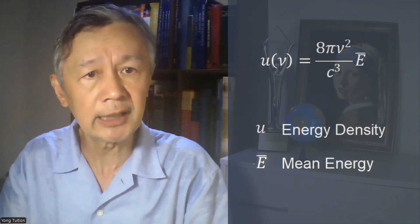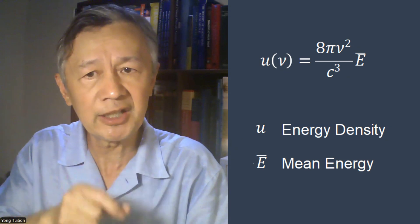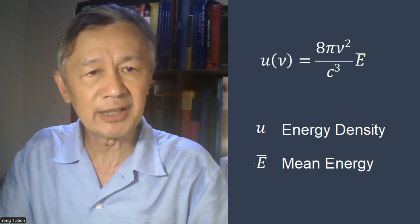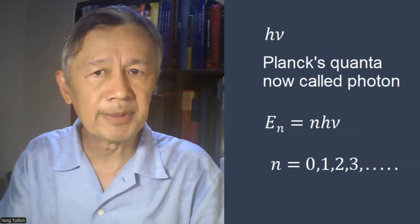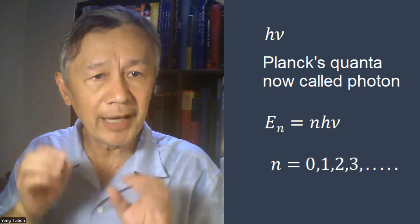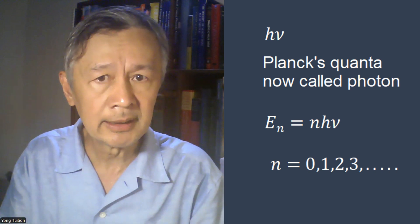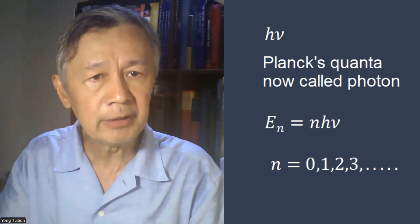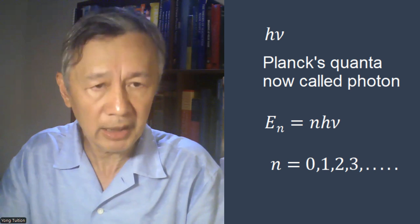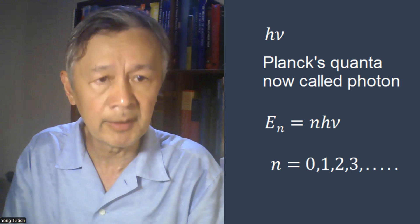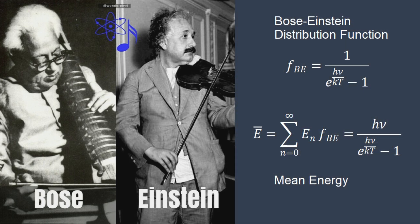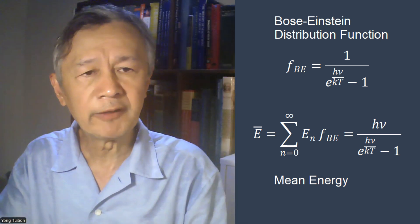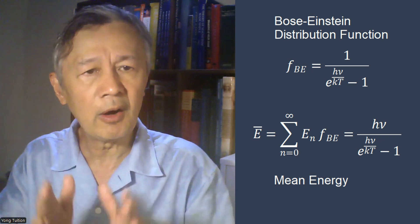In this way, the energy density can be written as follows: U equals 8πν² divided by c³, multiplied by the mean value of the energy. E-bar is the mean value of energy at different modes possible. The essential assumption Planck made is to express the energy of different modes as multiples of a quantum, namely E sub n equals n times h times ν, where n is an integer, h is the Planck constant, and ν is the frequency of the thermal radiation or electromagnetic wave. Using Bose-Einstein distribution in quantum statistics, we can quickly obtain the mathematical expression for the mean value of energy of different modes determined by different sets of standing waves.